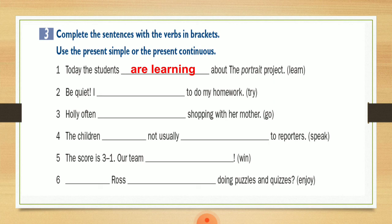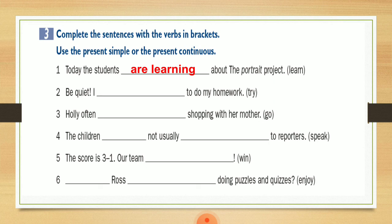Number two: Be quiet, I to do my homework، وعندي الفعل try — يحاول. بما إنه استخدمت be quiet معناتو أنا هلا عم بحاول إني أعمل واجبي بالوقت الحالي. معناتو في عندي فعل that is happening now at the time of speaking فرح أستخدم present continuous: I am trying to do my homework. Number three: Holly often shopping with her mother، وهون عندي keyword often اللي هي رح أستخدمها للـ simple present. ومع إنه Holly مفردة فرح أحط مع الفعل s: Holly goes shopping with her mother.